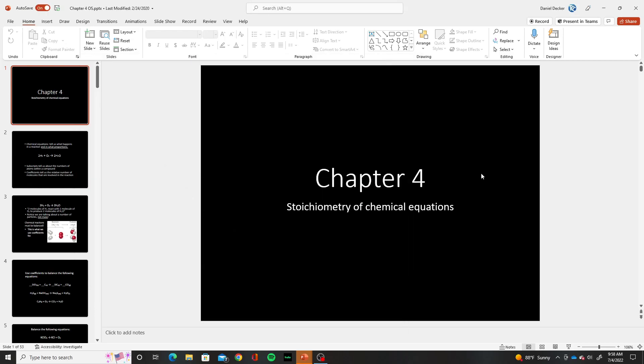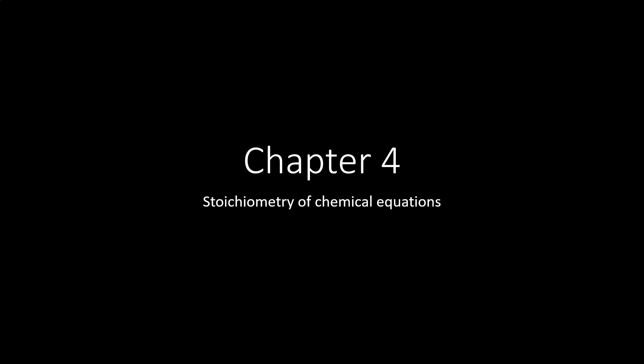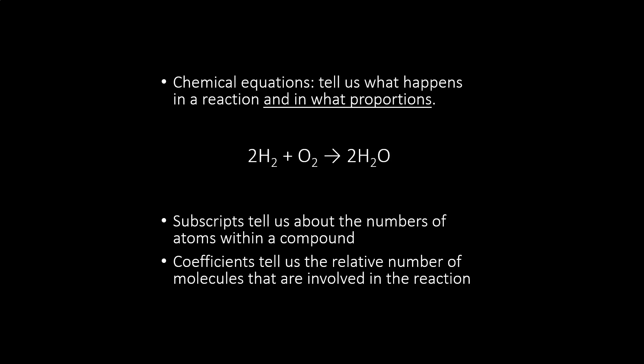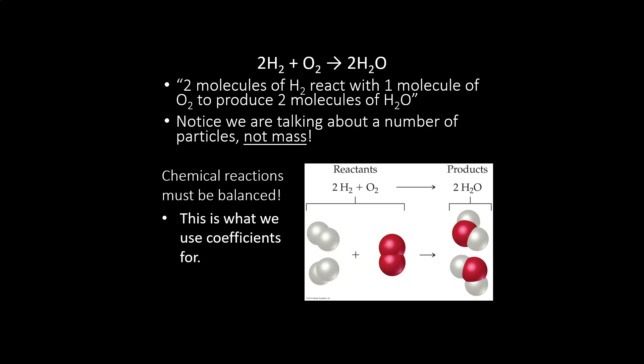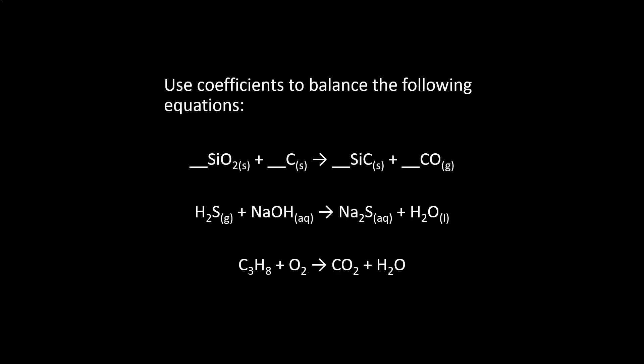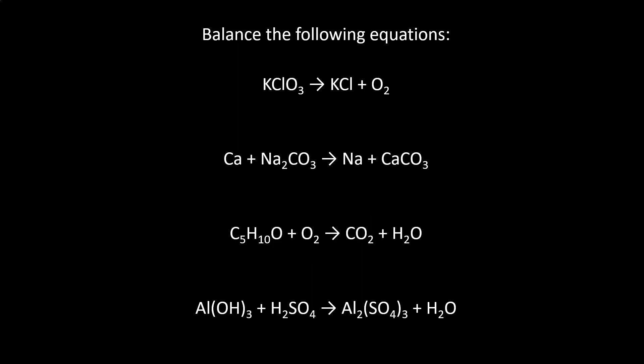Welcome to a video review for Exam 2 in General Chemistry 1. I'm going to jump right in because this will probably be a long video. Chapter 4 is the first chapter in Unit 2. We're talking about chemical equations, subscripts versus coefficients — I do expect you to know the difference. But the main point is balancing. I absolutely expect you to be able to balance chemical equations for this exam — probably around three equations.